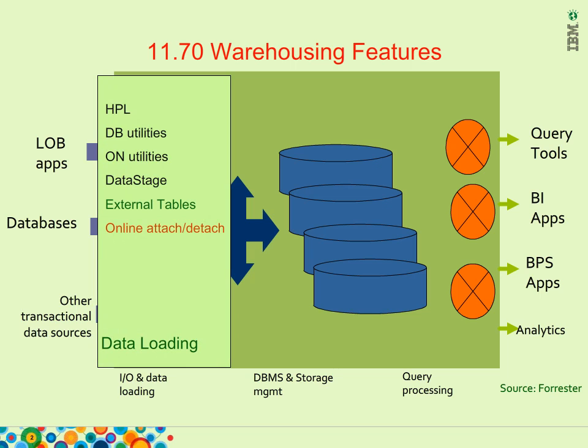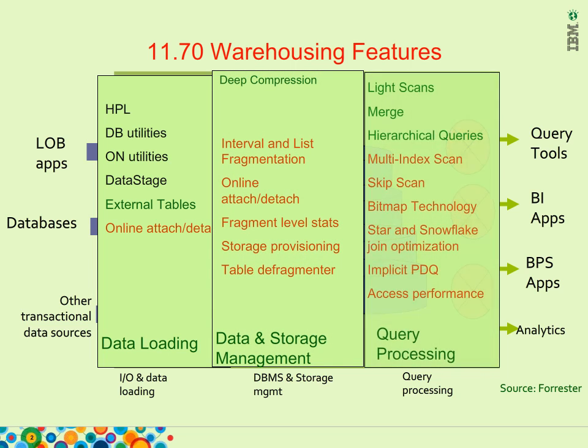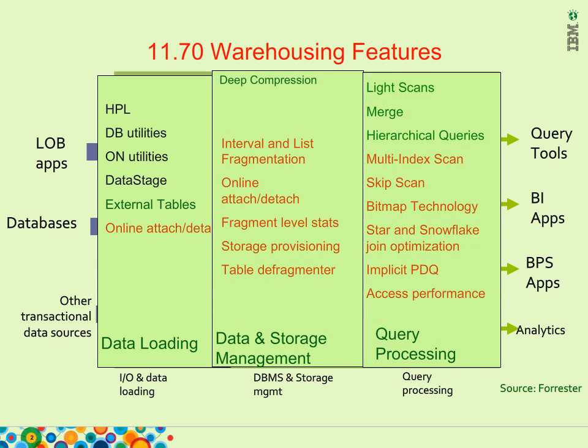The three areas are: 1. Data Loading, 2. DBMS Storage Management, 3. Query Processing. 11.70 enhanced these areas to make Informix a very viable platform for data warehousing. The features listed in red are the features that were added in 11.70. While all the features are well documented in our manuals and papers, I will highlight just a few in this presentation.